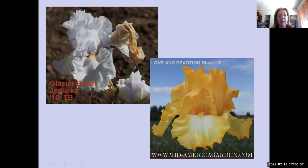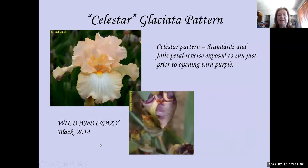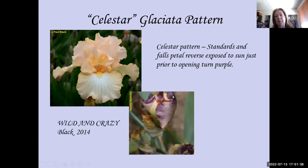Thanks to Chuck Chapman, I learned of the Celestar Glaciata pattern. The Celestar pattern: the standards and fall petals reverse when exposed to the sun — just prior to opening, they turn purple. Wild and Crazy by Paul Black demonstrates this: as it's being exposed to the sun, the reverse side of the petal is turning purple, then it opens. There's a little bit of purple left on the underside of the fall, but otherwise it looks like any other Glaciata. How this came to be, I don't know — this is very new and needs further looking into.